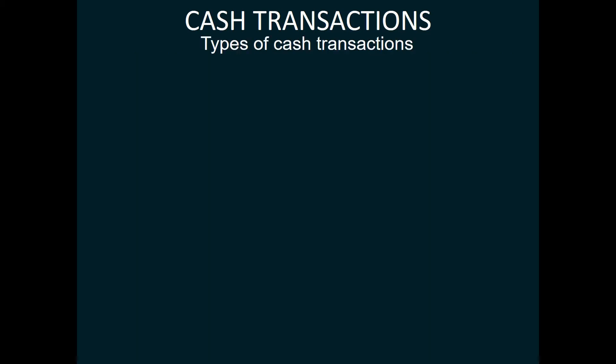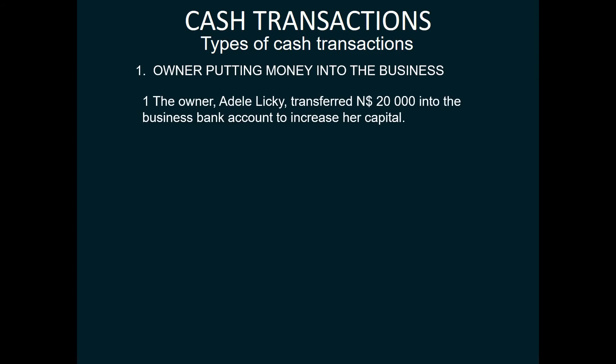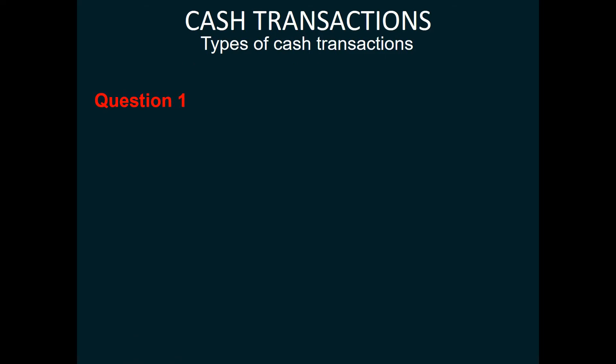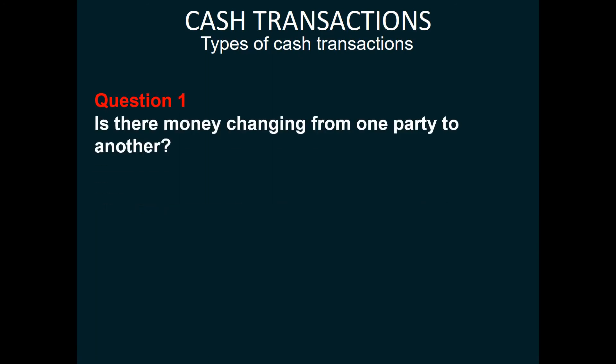Now let's have a look at the types of cash transactions. This one is where the owner is putting money into the business. At number one, the owner, Adele Leakey, transferred 20,000 into the business's bank account to increase her capital. Now we have three questions we need to ask ourselves. Question one: is there money changing from one party to another? Well, in this instance the answer is yes, because the owner is transferring money from herself to the business.